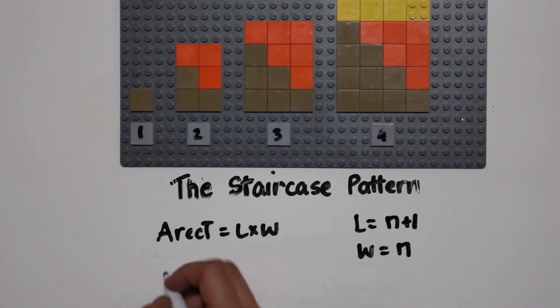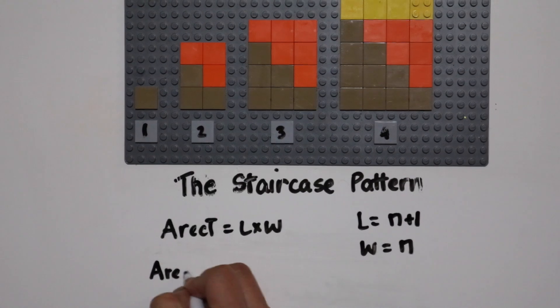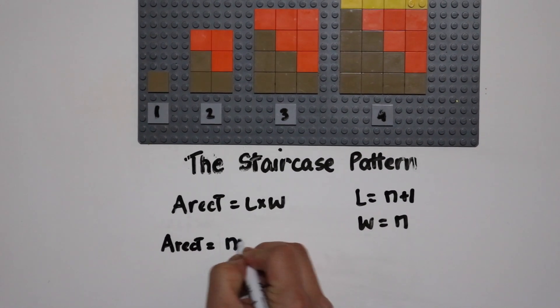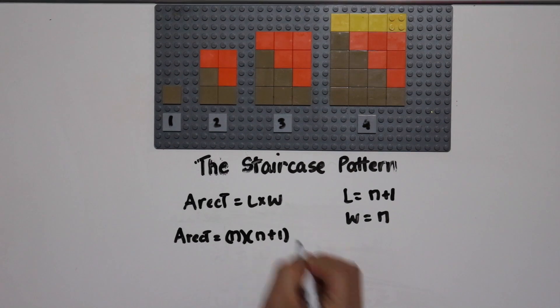So the area for our entire shape would be n times n plus one.